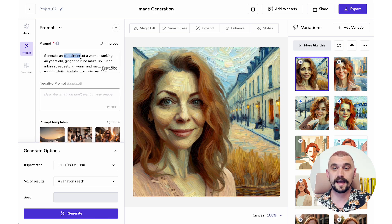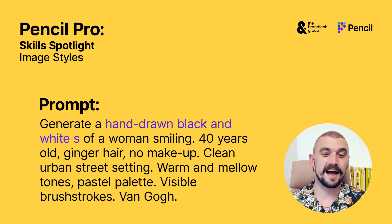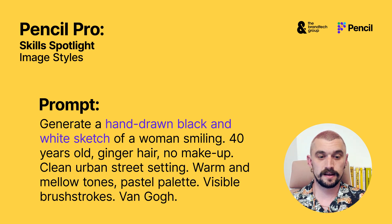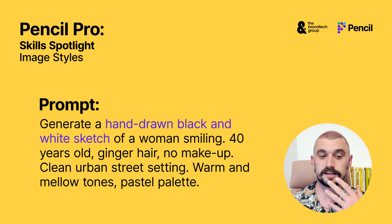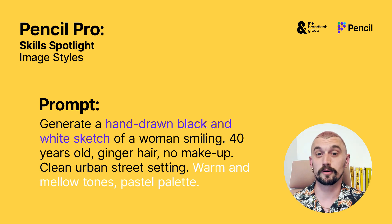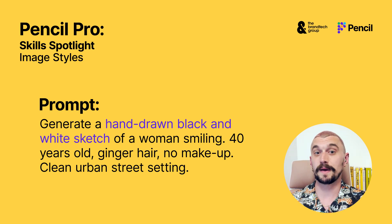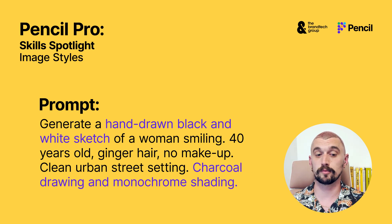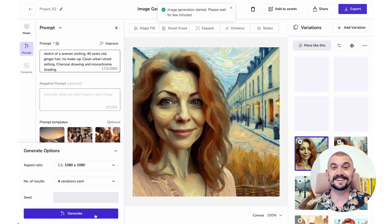We're going to finish with a hand-drawn sketch — a hand-drawn-esque sketch. I want to specify that I want it to be black and white, just to give a bit of difference from what we've been doing. I'm going to get rid of visible brush strokes, get rid of Van Gogh, and get rid of my colours as well — I've said black and white, so let's not confuse it by putting in a colour palette. Now we're going to specify charcoal drawing with shading, and I'm going to say monochrome shading just to reinforce black and white.